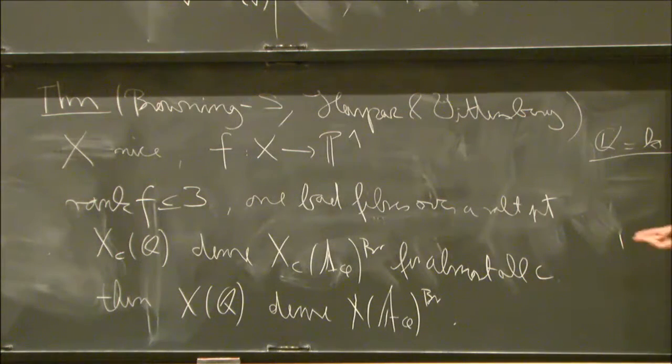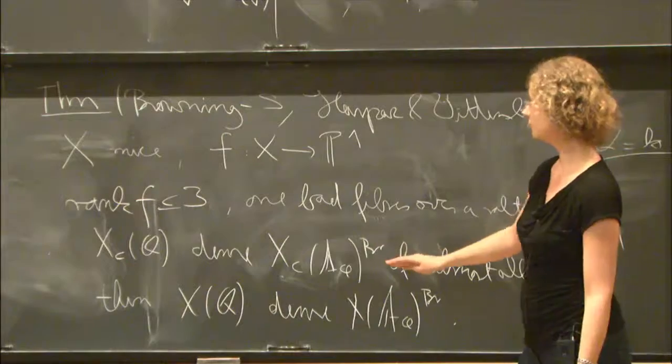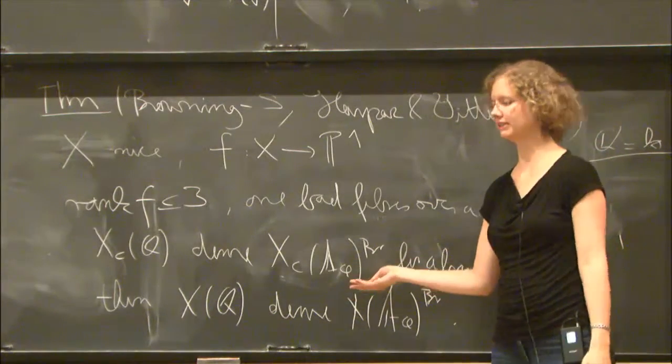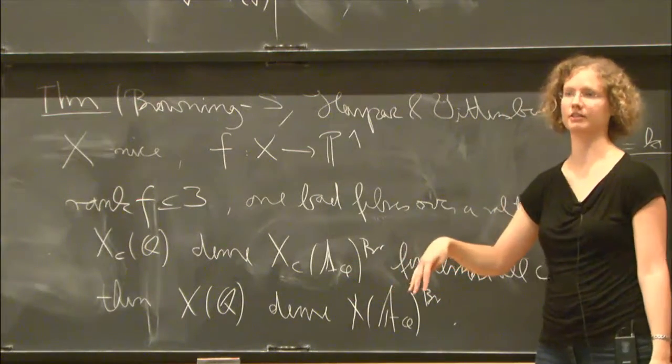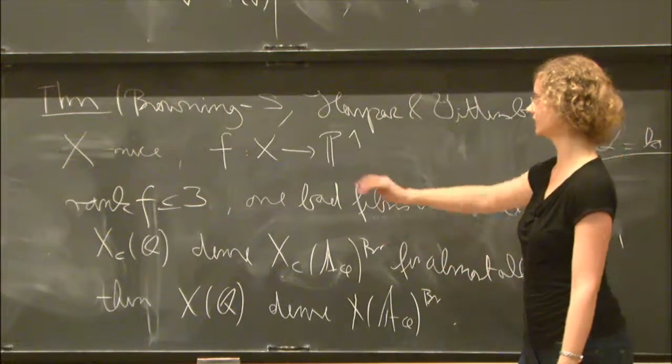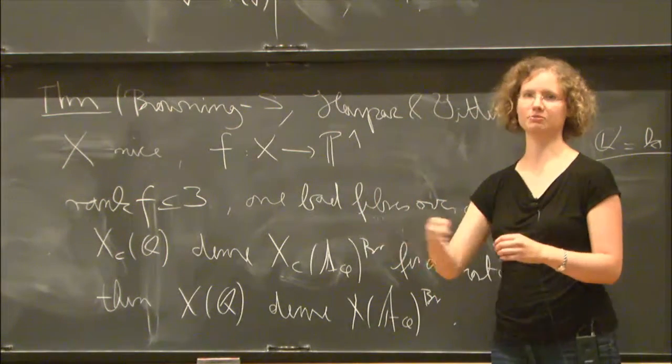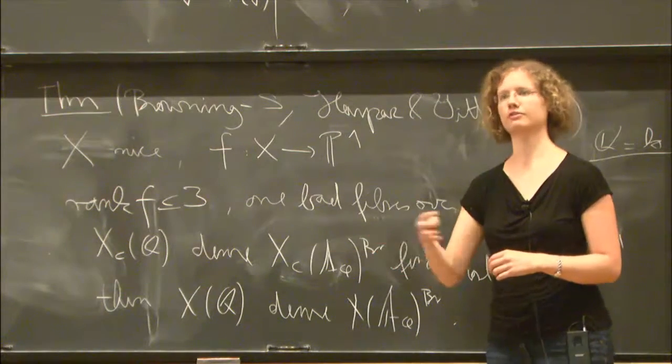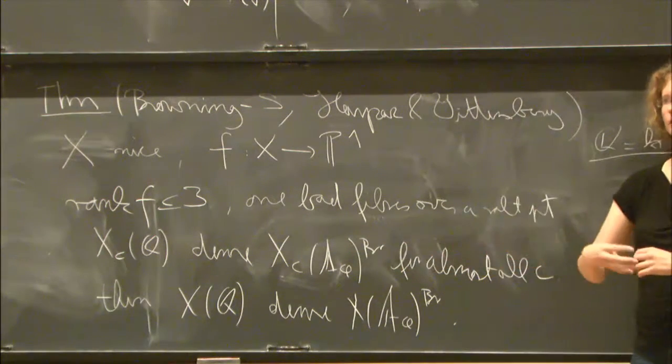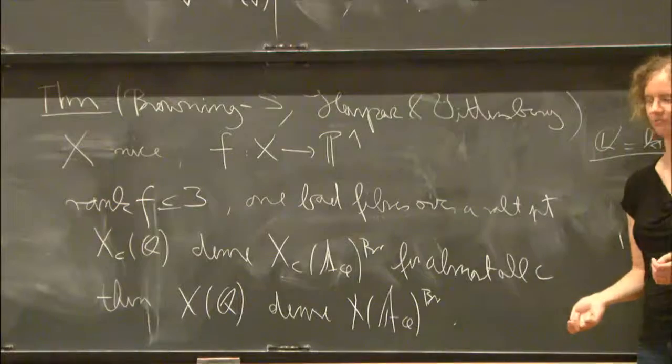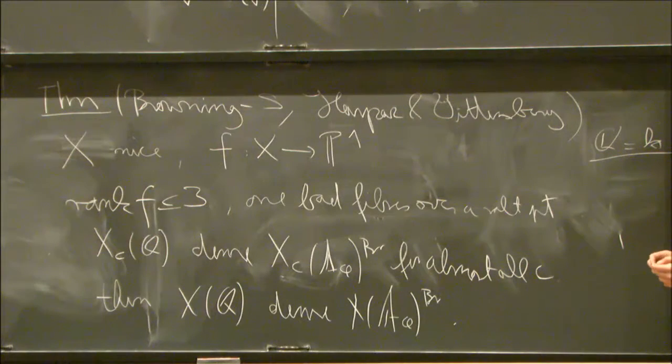Previously, it has only been known for the rank being at most 2 by Harpaz and Wittenberg, which builds on work of Colliot-Thélène and Skorobogatov for the rank at most 2 and rank 1 is due to Harari. If you allow all the bad fibers to lie about rational points, then there's very strong work of additive combinatorics. You can plug in work of Lillian and Mathieson and deduce it for any rank.